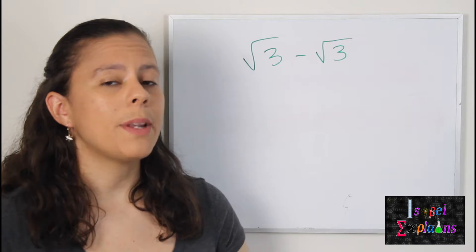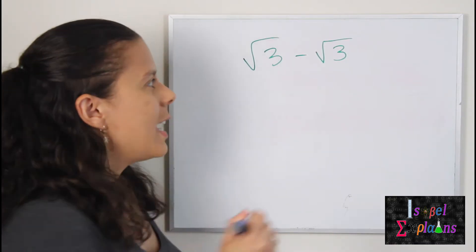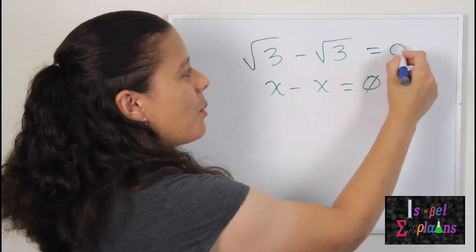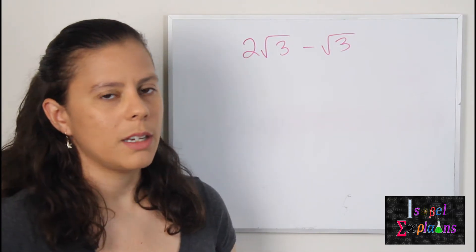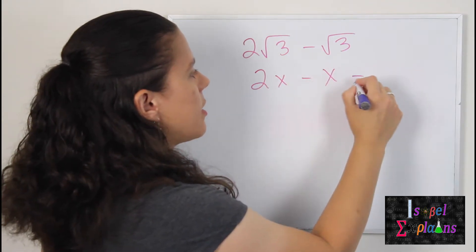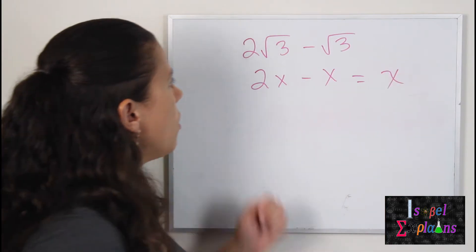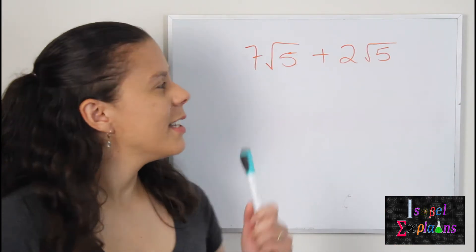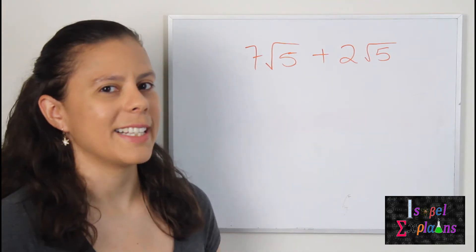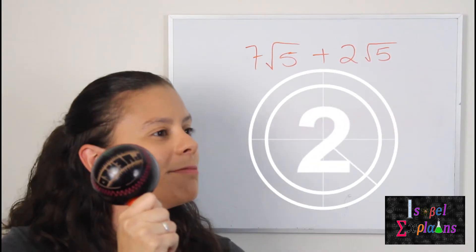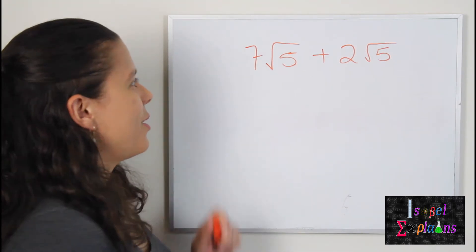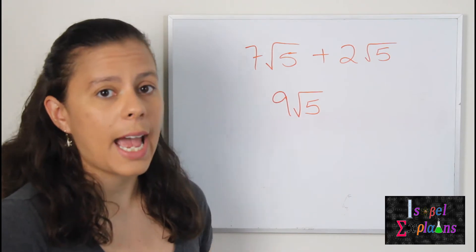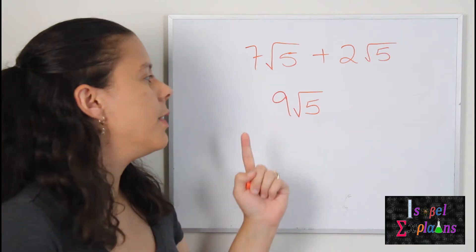Hope that makes sense. So what would happen if you had the square root of three minus the square root of three? Well, if you had x minus x, what would that be? Zero, right? That means that the square root of three minus the square root of three is just zero. So what about two square root of three minus the square root of three? If we use the same analogy of two x minus x, that would be just x. So two square root of three minus the square root of three is just going to be the square root of three. Now you try it: seven square root of five plus two square root of five. I hope you got nine square root of five, because if this would have been seven x plus two x, that would have been nine x. So seven square root of five plus two square root of five is just going to be nine square root of five.